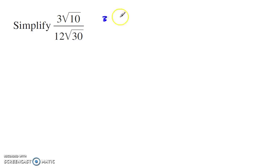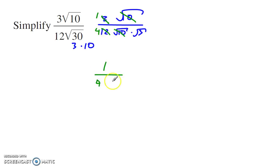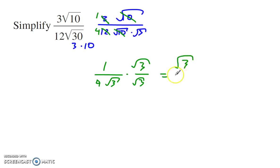To simplify this expression, use a few properties: 30 is also 3 times 10, so we have 12 and then radical 10 times radical 3. The radical 10 can cancel out. Then 12 and 3 can be simplified — divide each by 3: you get 1 over 4 radical 3. To get rid of radical 3, multiply by radical 3 on top and bottom, giving radical 3 over 4 times 3, which is radical 3 over 12.